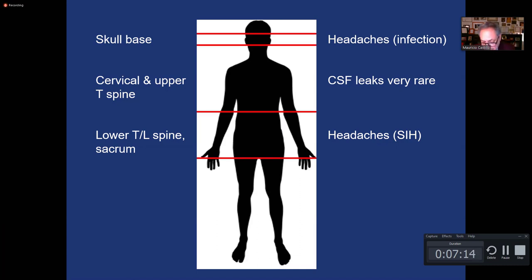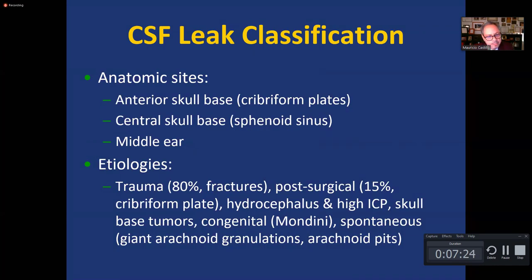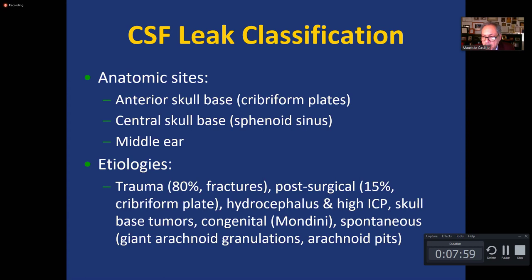Leaks at the level of the basal skull do not result in intracranial hypotension; they produce headaches by virtue of infection or inflammation. At the skull base, most leaks occur anteriorly at the level of the cribriform plates, at the level of the perisella region in the sphenoid sinus, and in the middle ear — particularly through the roof, or tegmen tympani. The most common etiology for a bony defect allowing CSF leak at the skull base is trauma, whether surgical or accidental, accounting for 95% of defects.